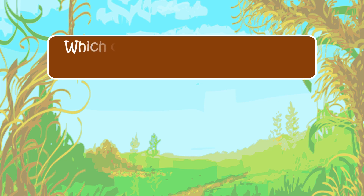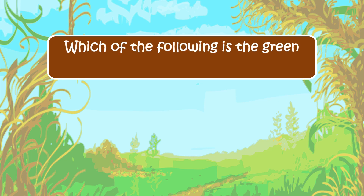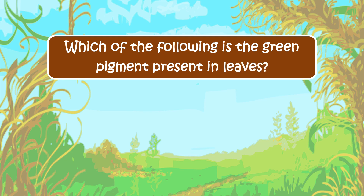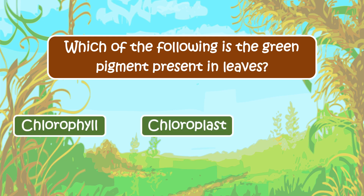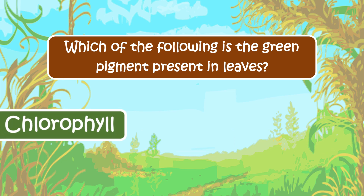The next question is: which of the following is the green pigment present in leaves? The options are chlorophyll, chloroplast, or stomata. The right answer is chlorophyll.